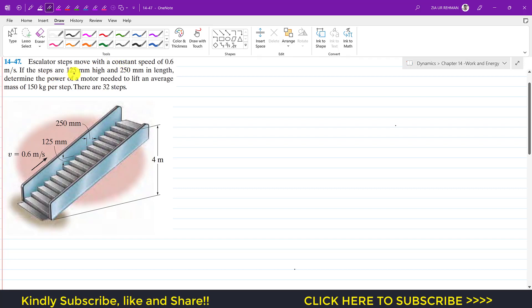If the steps are 125 mm high and 250 mm in length, determine the power of motor needed to lift an average mass of 150 kg per step and there are 32 steps.